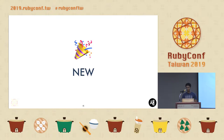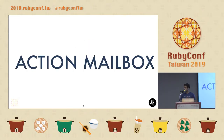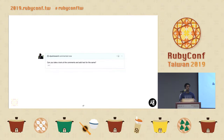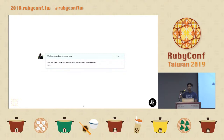The first newest component is Action Mailbox. If any of you uses GitHub, Jira, Trello, or similar technologies — one of the things they allow is, if you get an email or notification and you reply to that notification, it actually creates a comment on those services. This can be achieved by listening to emails in services and then processing those.